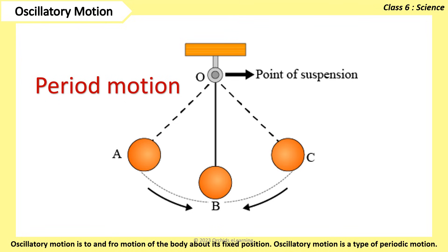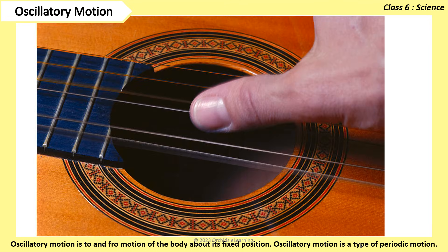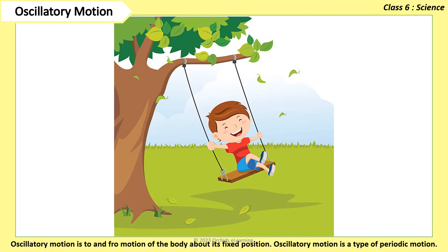Oscillatory motion is to and fro motion of the body about its fixed position. Oscillatory motion is a type of periodic motion. Examples of oscillatory motion are vibrating strings, swinging of the swing, etc.